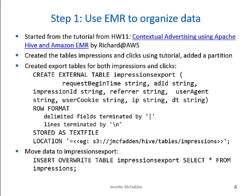In step 1, we're going to use Amazon's Elastic MapReduce to organize data. I started from the tutorial we used in Homework 11, the contextual advertising using Apache Hive and Amazon EMR by Richard at AWS. You don't need to complete the entire tutorial, but at least get an EMR cluster running, SSH into it, and create the impressions and clicks tables from the sample data. Add at least one partition of data. You should also have an S3 bucket ready to use for the sample data exports. I've created a Hive script that will create two export tables that will be stored in the S3 bucket you've created. The EXTERNAL keyword is important — this means the table data will be stored in S3.